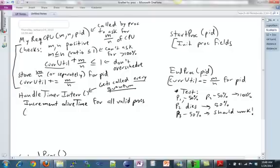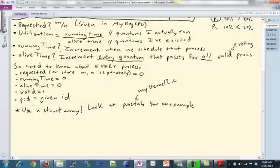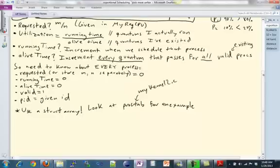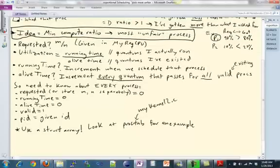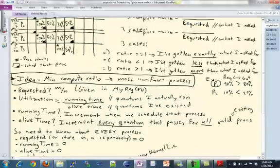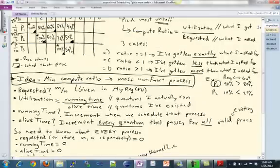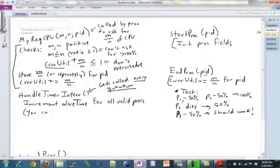Now here at this point, you can also calculate the utilization and compute ratio. You have everything that you need. So let's go back here. Remember, utilization is running time over a lifetime. We have a lifetime, running time is stored, and we're going to worry about how to update that in a bit. And then compute ratio is utilization over requested.